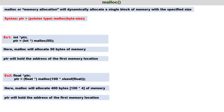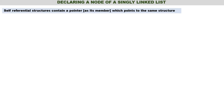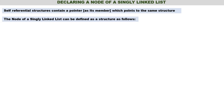Now we will go to the point where we declare a node for a single linked list. We should understand self-referential structures. Self-referential structures contain a pointer as its member which points to the same structure. With an example it will be more clear. The node of a single linked list can be defined as a structure as follows.